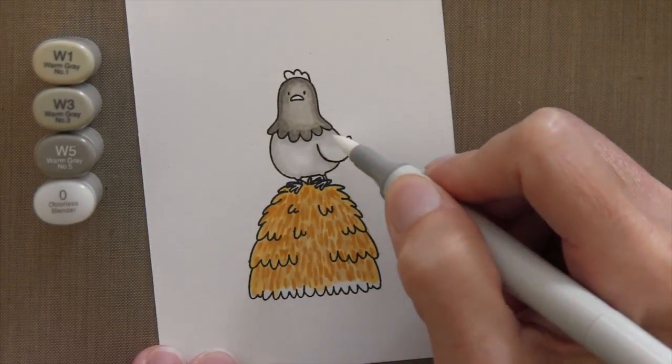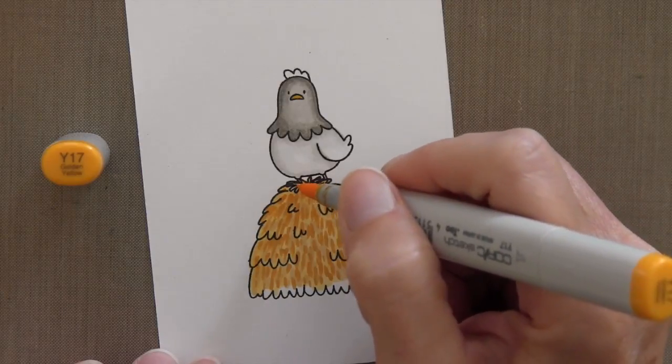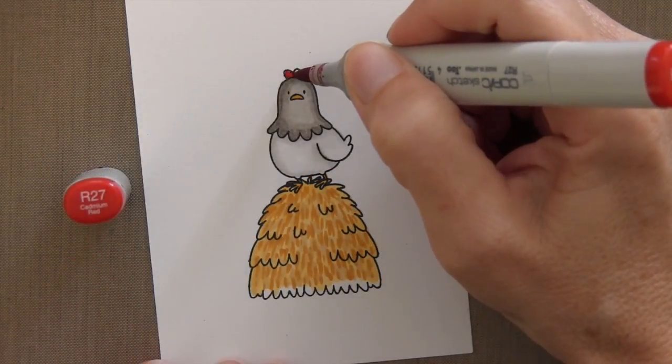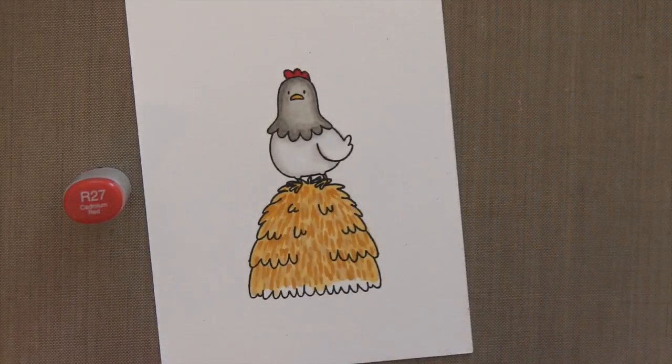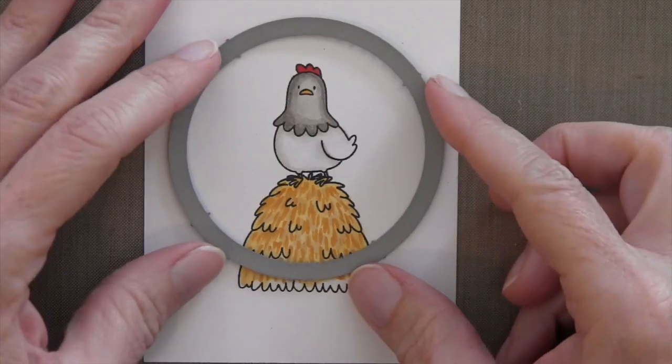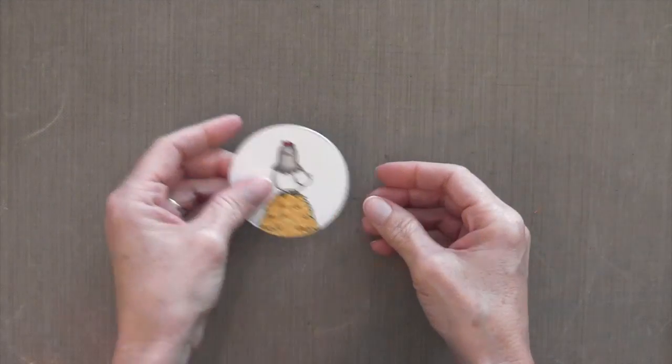For his body I wanted it to be white so I'm just adding a few shadows with the W1 and then blending it out with the zero colorless blender. And then finally I'm just adding a couple of more details, R27 to the top. And now I'll take my stitch circle and I'm going to die cut that out right in the center.